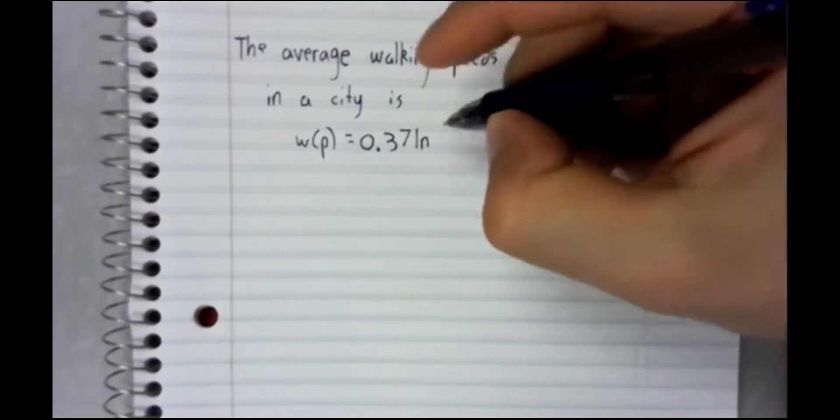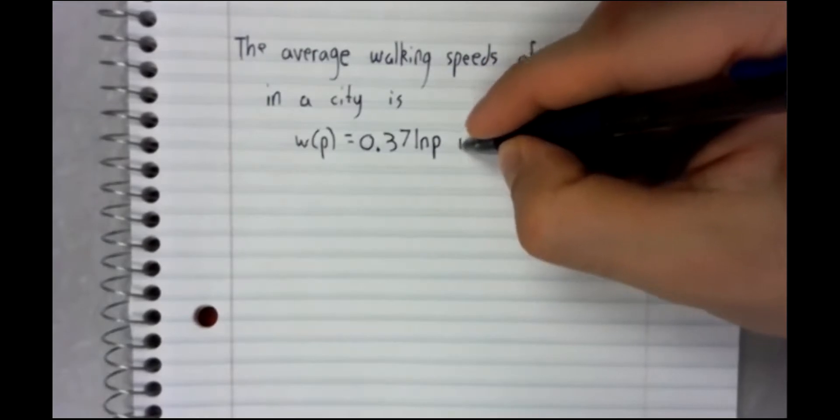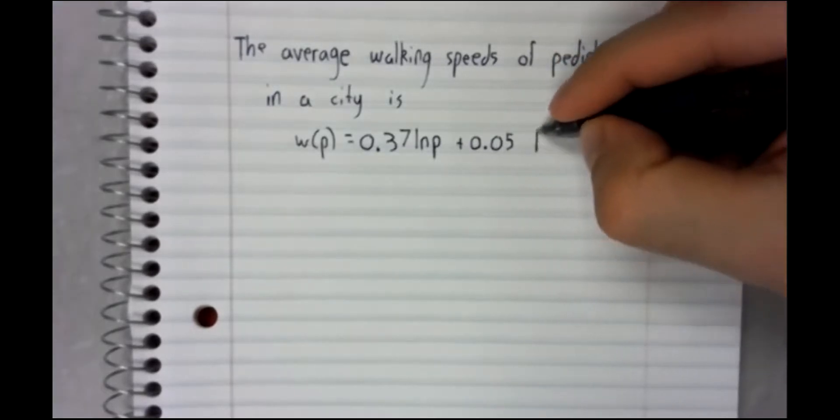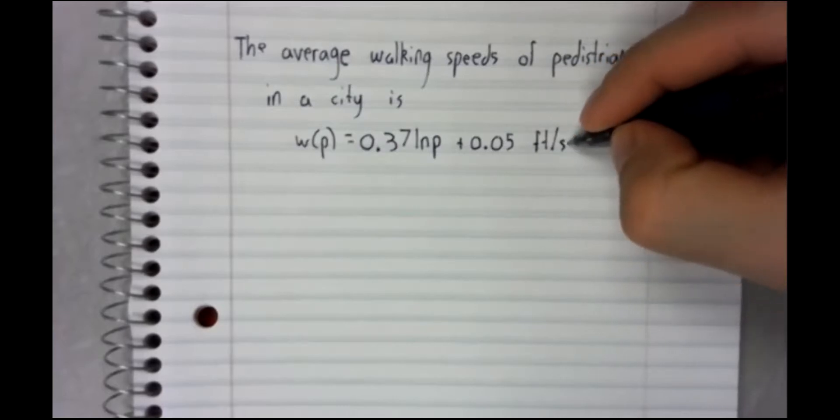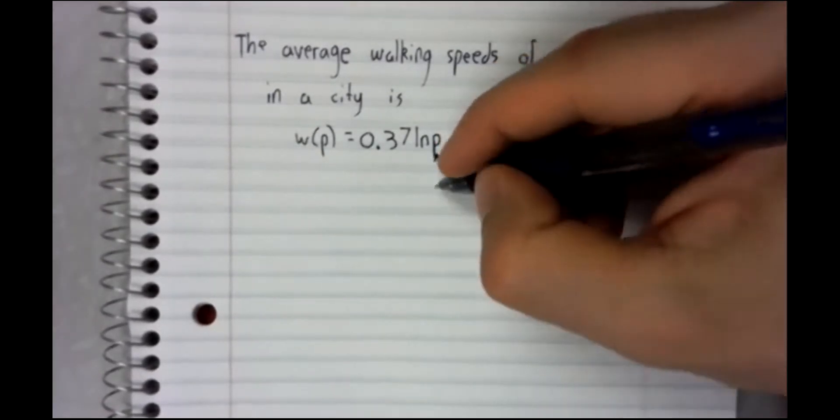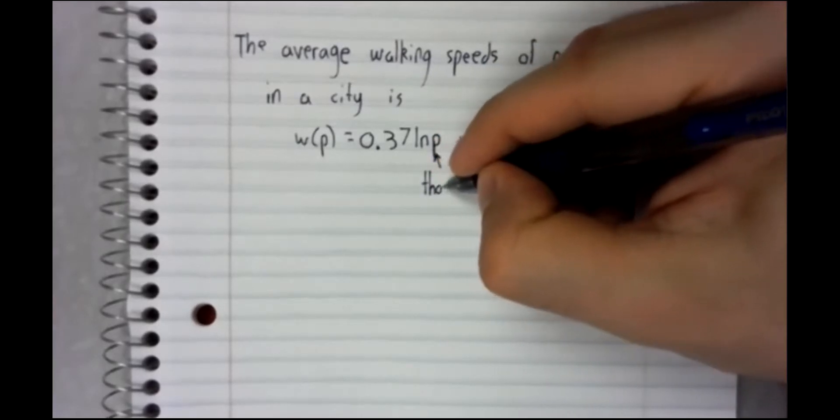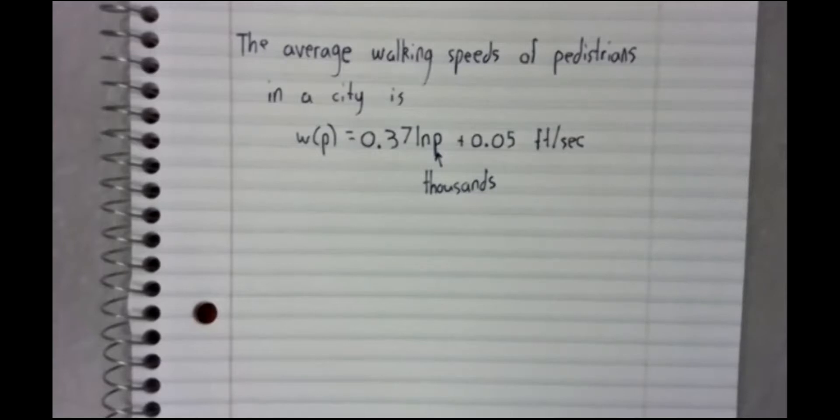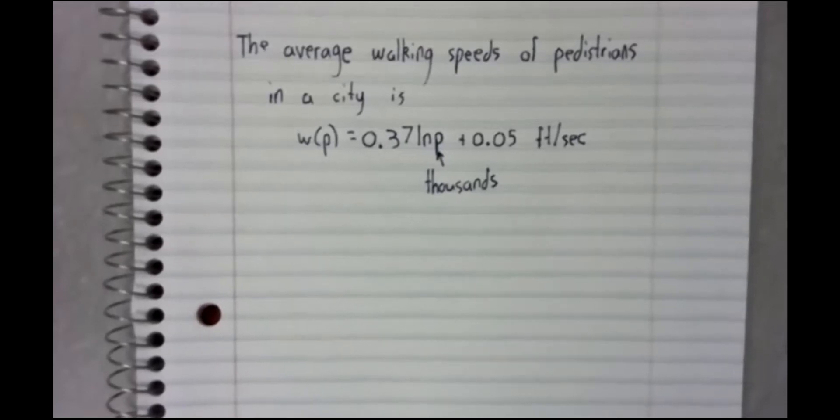People walk faster in big cities than they do in smaller cities. So here, P is the population of the city measured in thousands. This is a classic result obtained by two psychologists, a husband-wife team whose names are not coming to me at the moment.